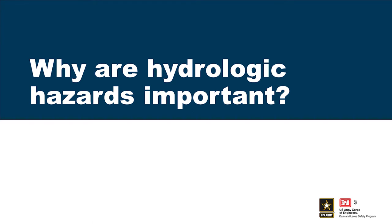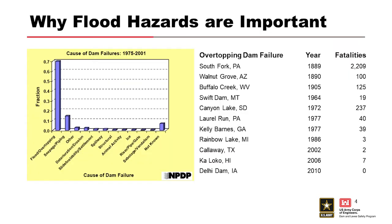Why are hydrologic hazards important? Because people's lives are involved. Here we have a plot of dam failures from 1975 to 2001, and overwhelmingly the percentage of dam failures is due to overtopping. That's why we focus so much on it when we're doing risk assessment, because that's the major cause of dam failures. Secondly, we have seepage and piping, a bit lower down.